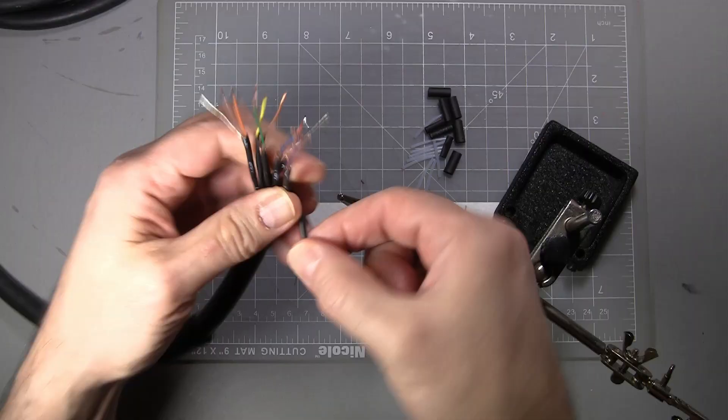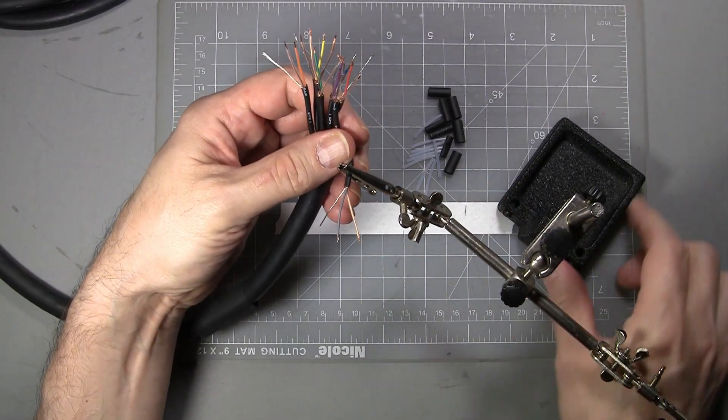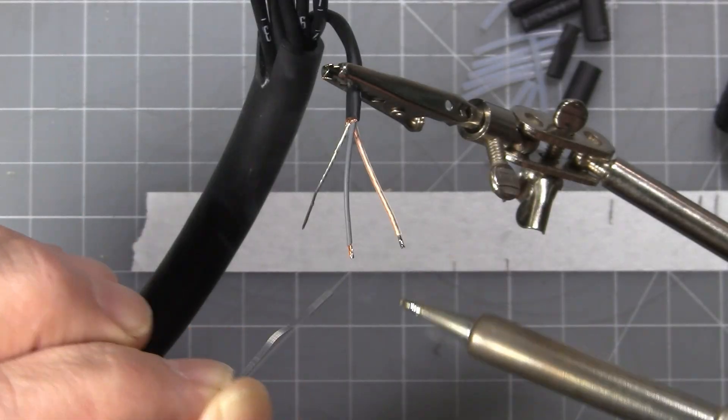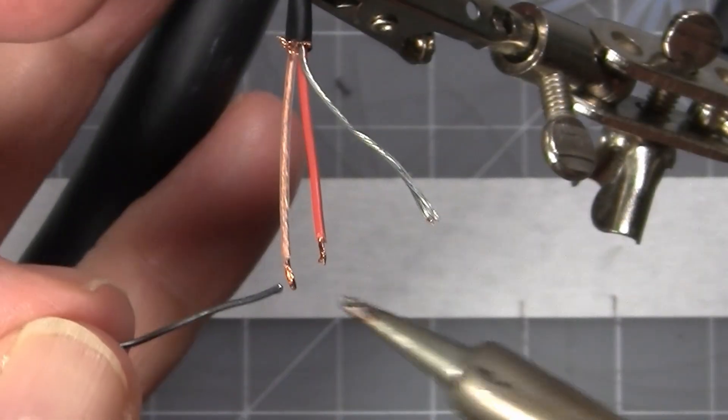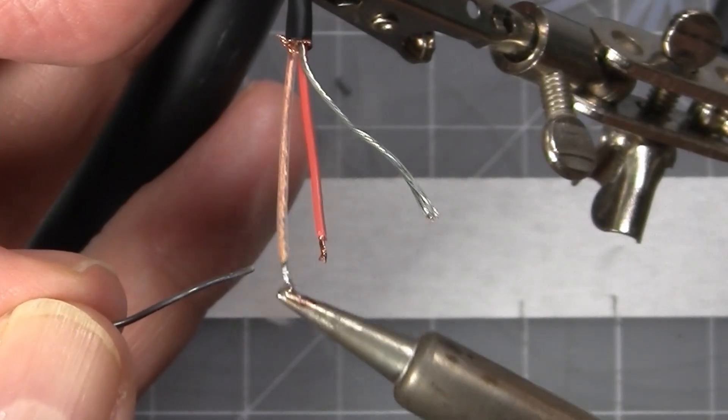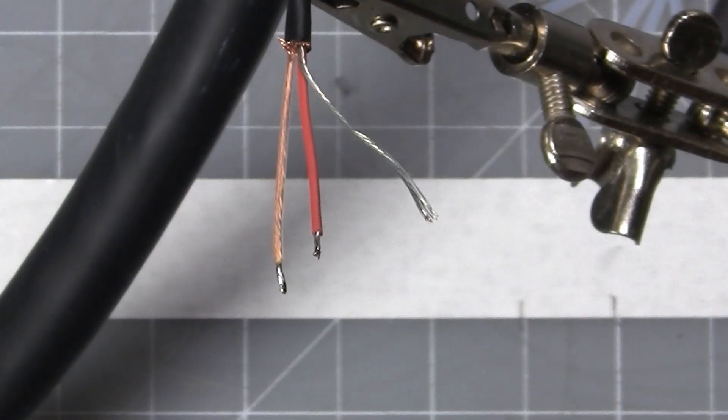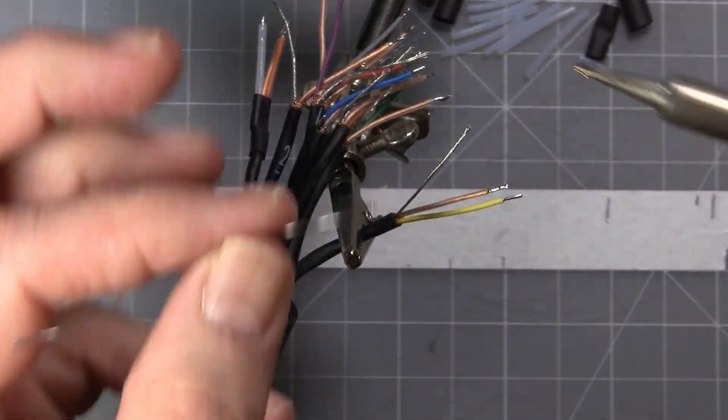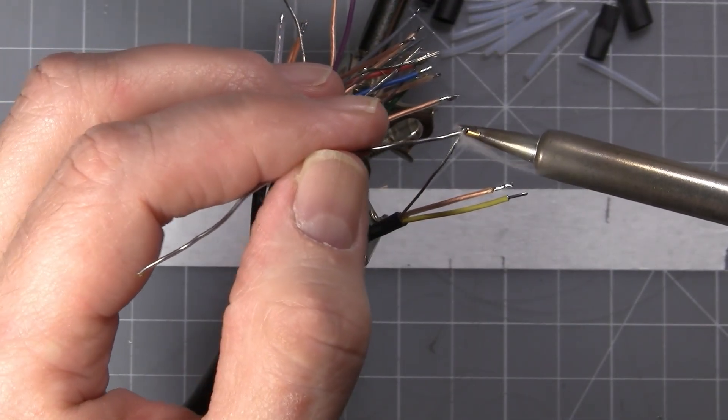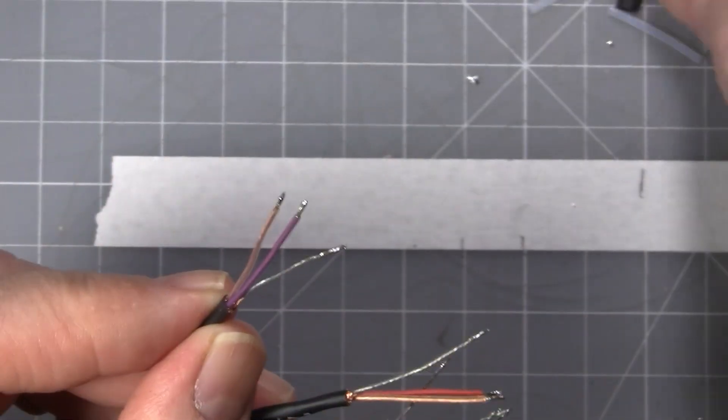The next step is to apply a small amount of solder to the wires or tin the wires. With the drain wire sometimes it's easier to tin the wire after putting on the Teflon or shrink tubing because it can be a little tough to slide it on. In this case the Mogami wire is 25 gauge and my Teflon is 22 gauge so the Teflon will fit just fine even after tinning.